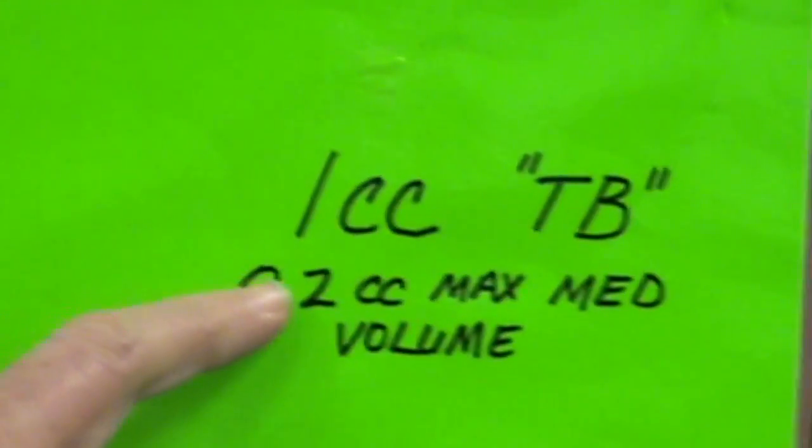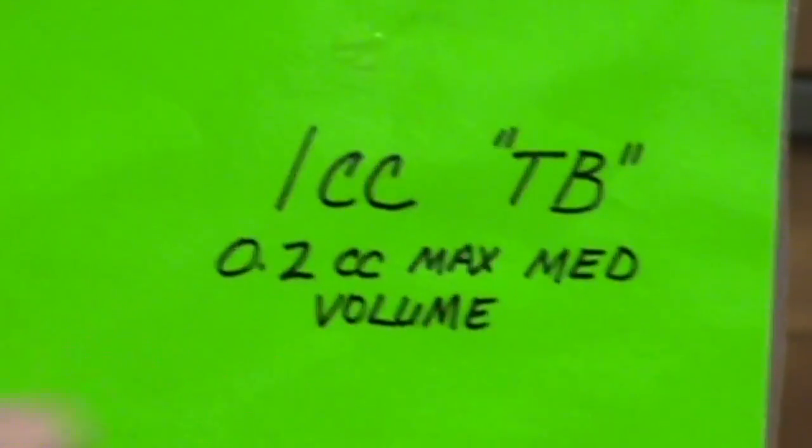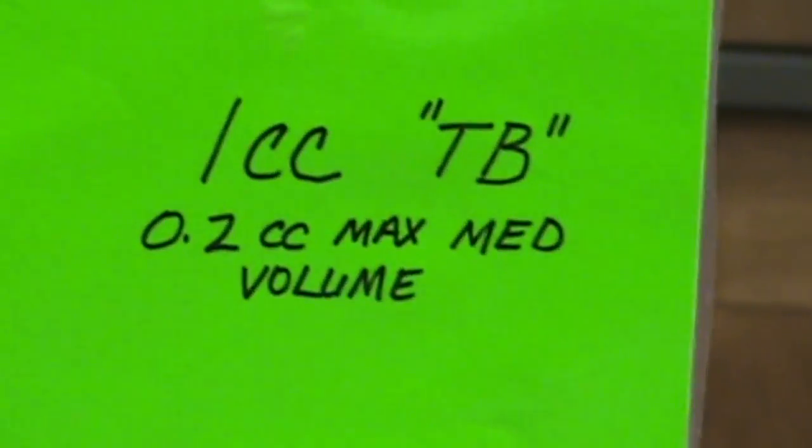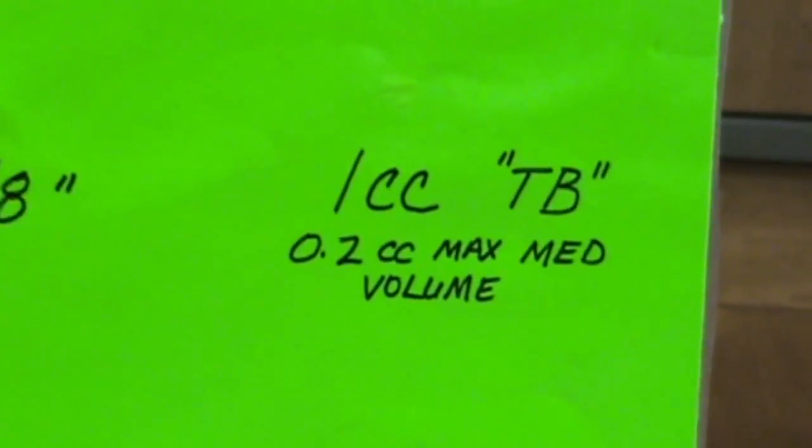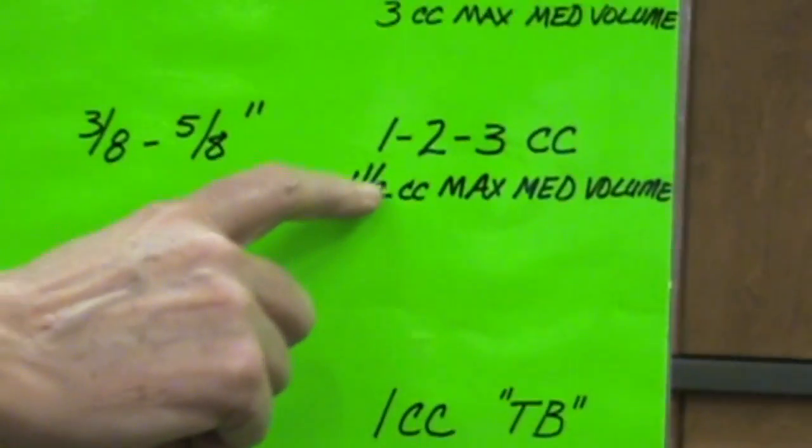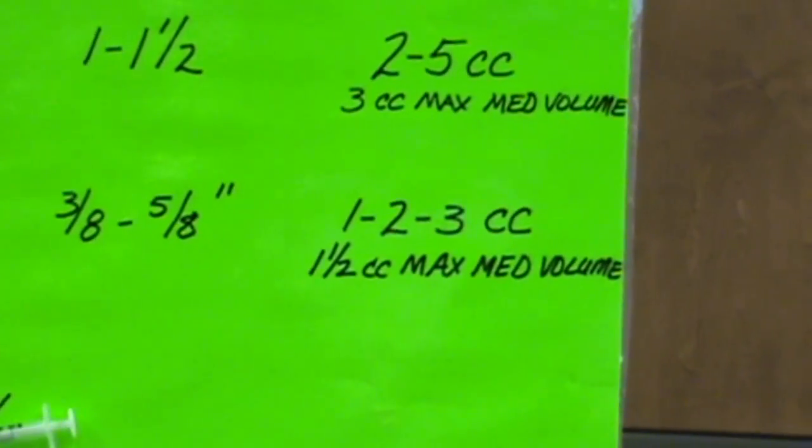Coming back over here to the TB, 0.2 milliliters is the maximum med volume that you can give. And up here for the sub-q is one and a half milliliters is the max you can give.